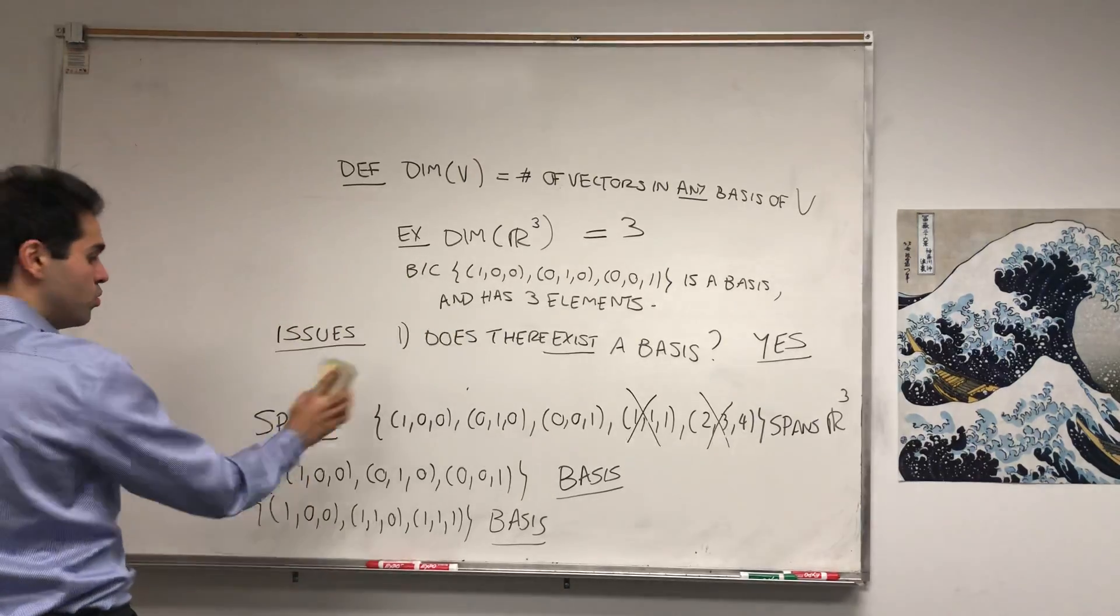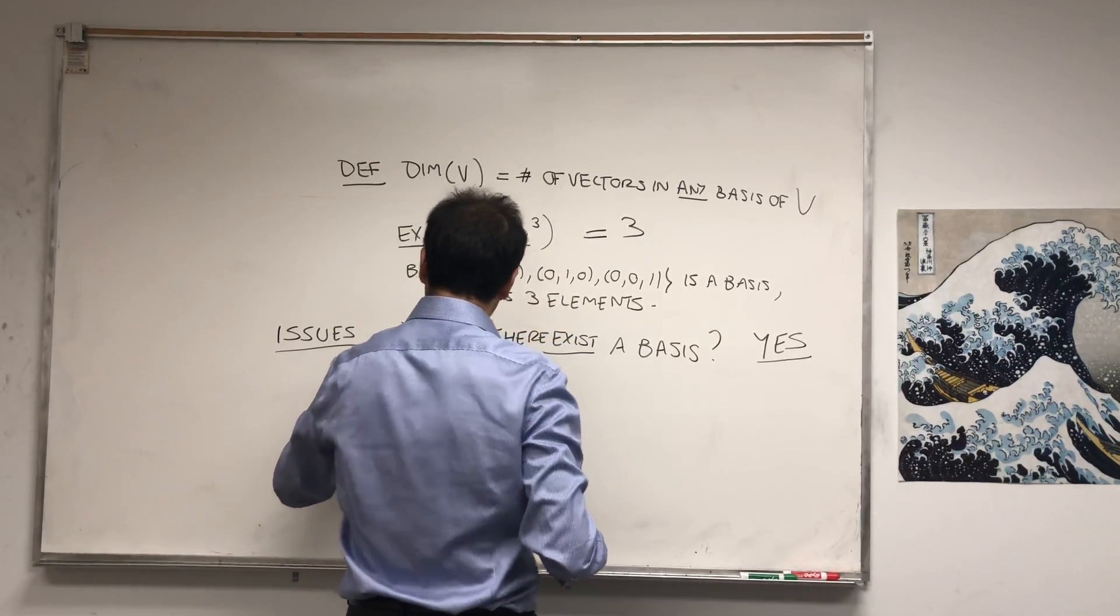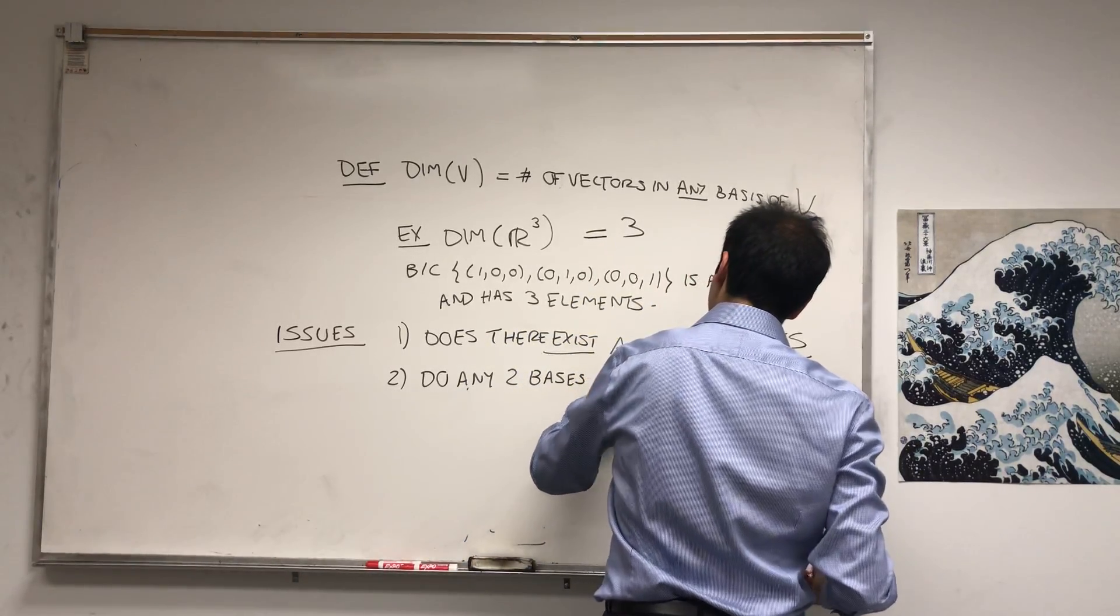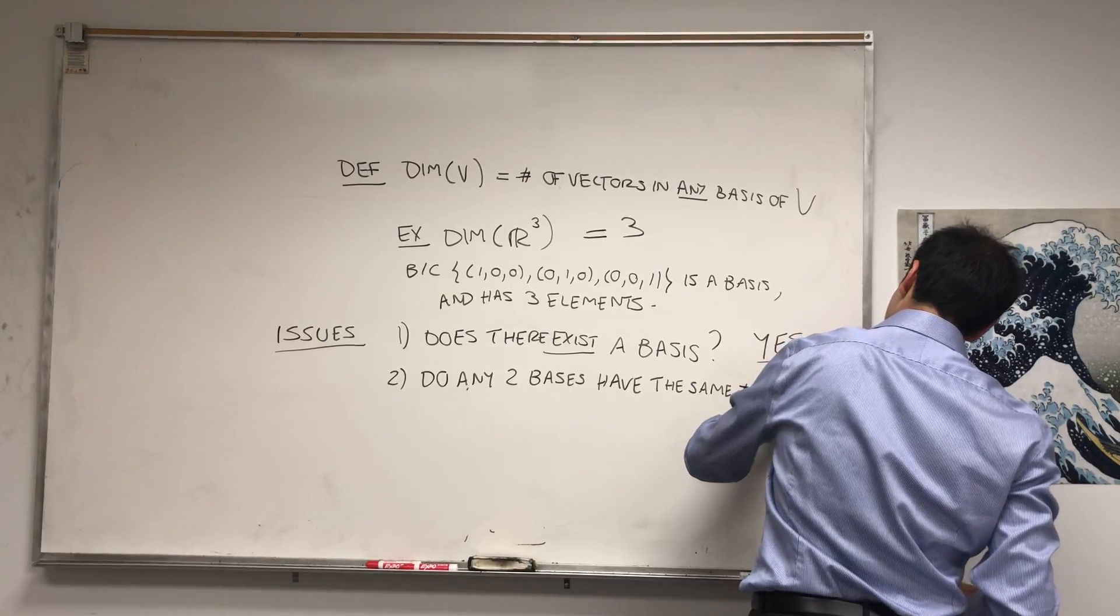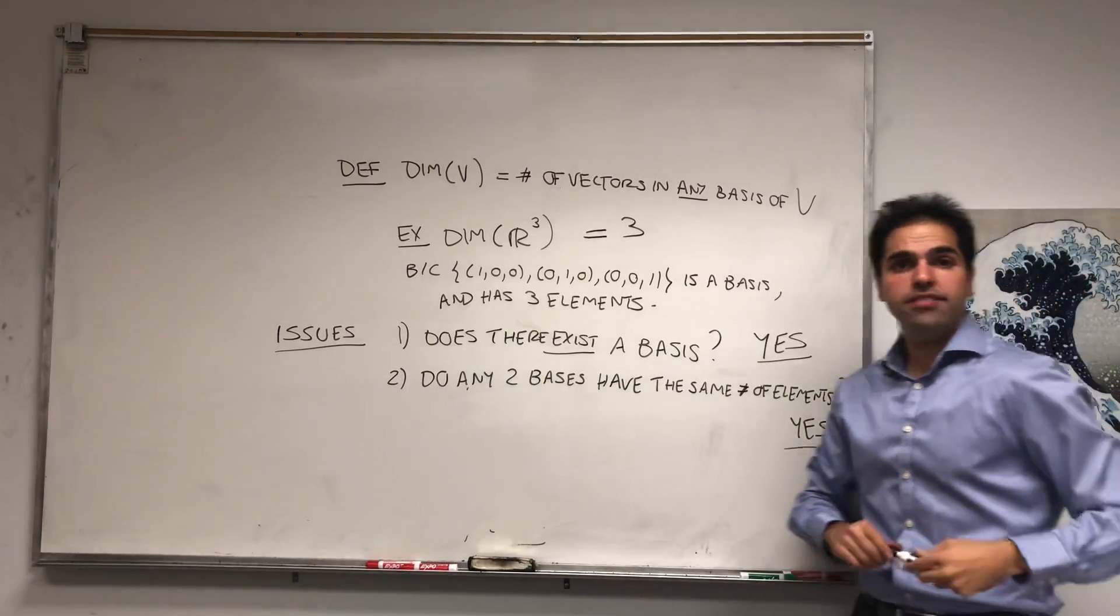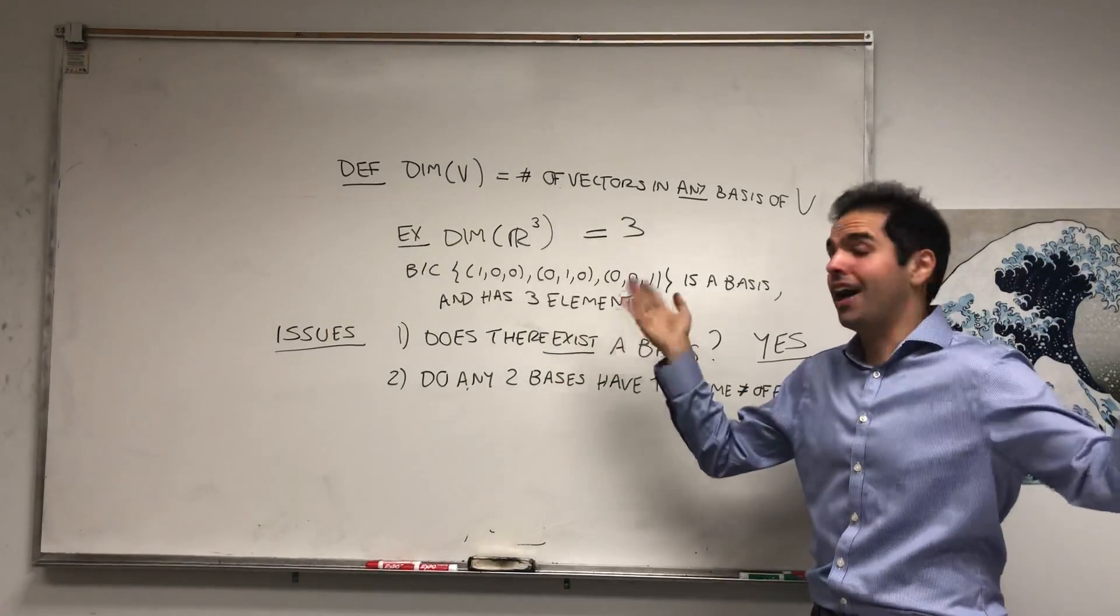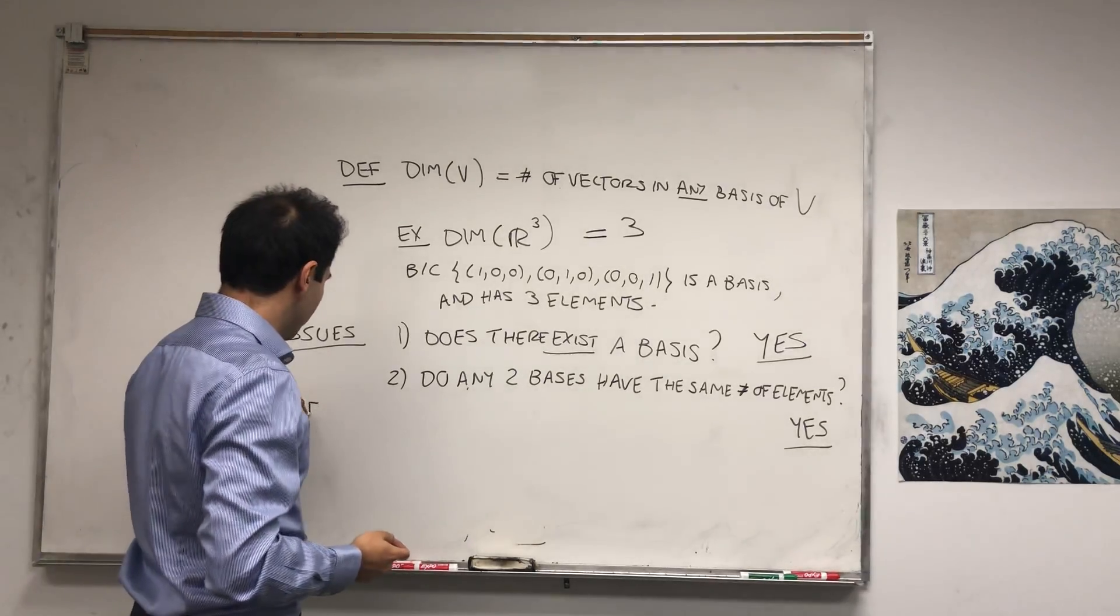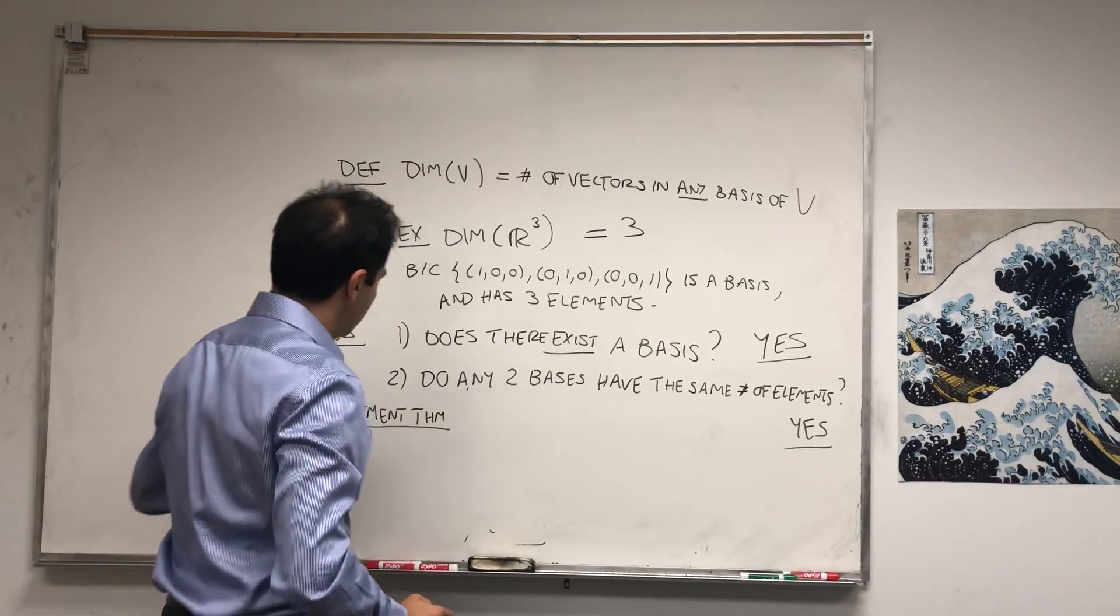What's more important is: do any two bases have the same number of elements? And it turns out the answer is also yes. And by the way, why is that an issue? Suppose you have a basis with three elements and then a basis with four elements. What's the dimension? Is it three? Is it four? I don't know. And this is also true by a non-trivial result called the replacement theorem, for which I've done a video also proving this fact.